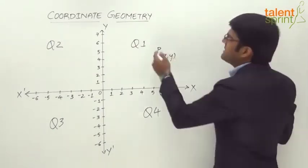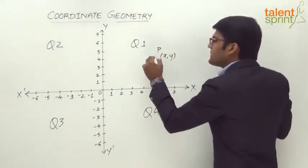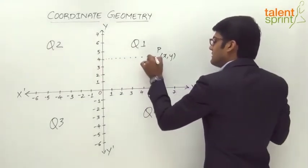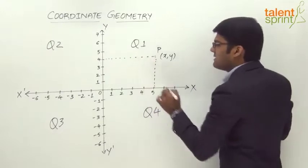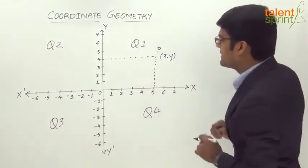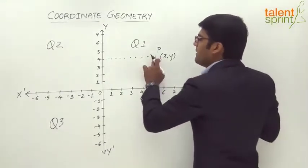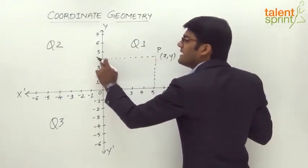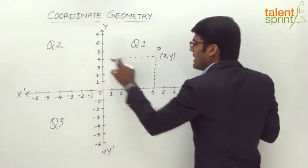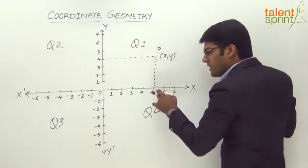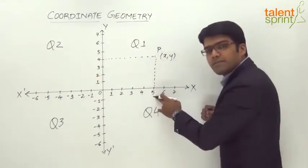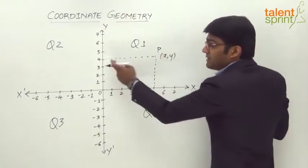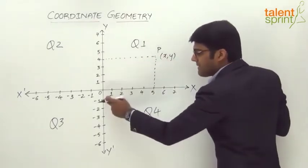For example, let us take the point P here. When we try to map it to the y-axis and x-axis, the point P when you draw a line toward the y-axis meets at 4, and when we draw a perpendicular on the x-axis it meets at 5. So we see that the distance of point P — the horizontal distance — is 5.